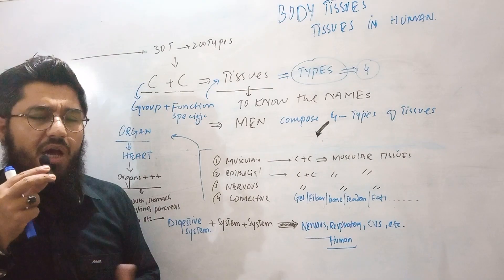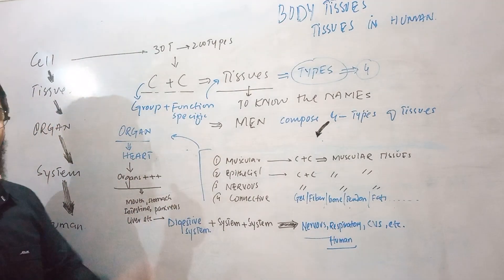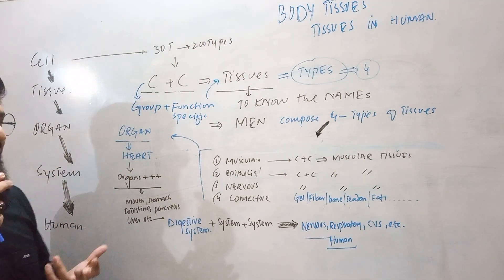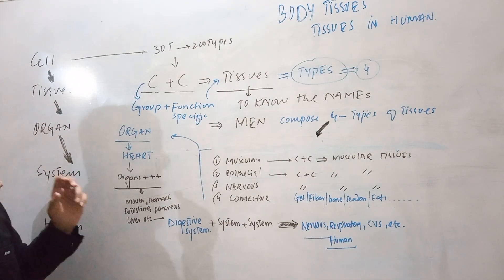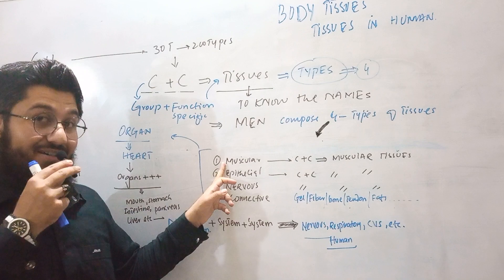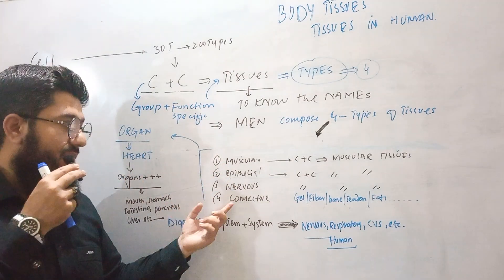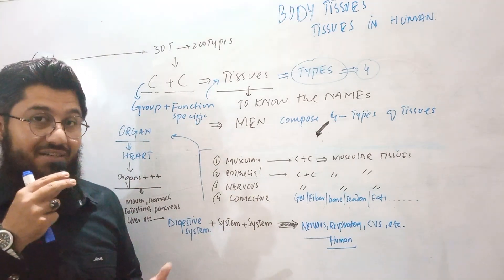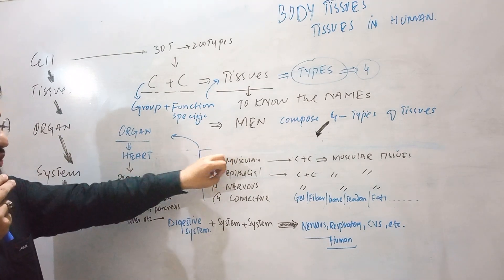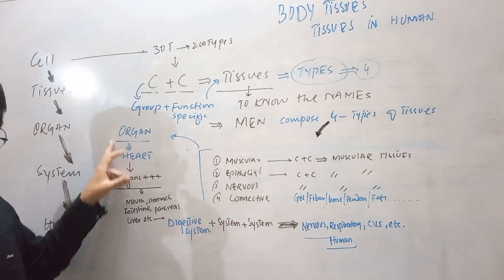An example right in front of you is the heart. The body is composed of several organs — I just took the heart because heart is a symbol of love. Heart is composed of muscle — you can see the muscles in the heart — epithelial covering, nervous tissue and nervous supplies, and connective tissues in the sense of tendons and ligaments. So all the tissues group together, they perform a specific function, and they form an organ called the heart.